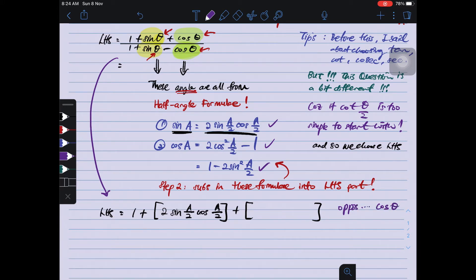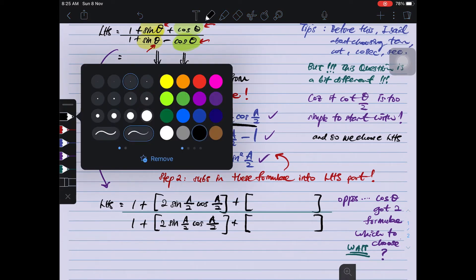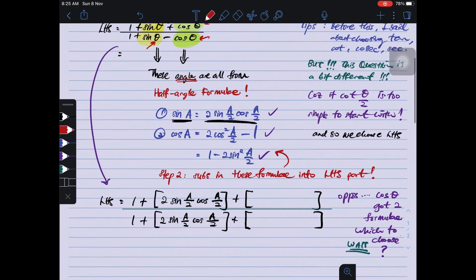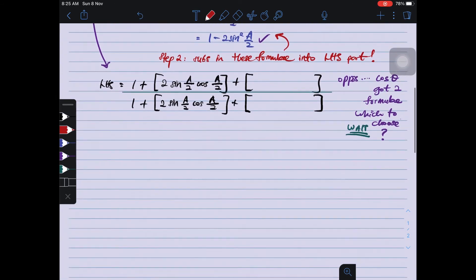Cos theta has two formulas. Cos A has two formulas, so which one to choose? Which one should I choose? Wait. Just wait there for a moment. We write first the denominator part, which is 1 plus sin theta, put in the formula, double angle: 2 sin A over 2 cos A over 2. Plus... oh my god, cos theta has two types of formula. What should I choose?